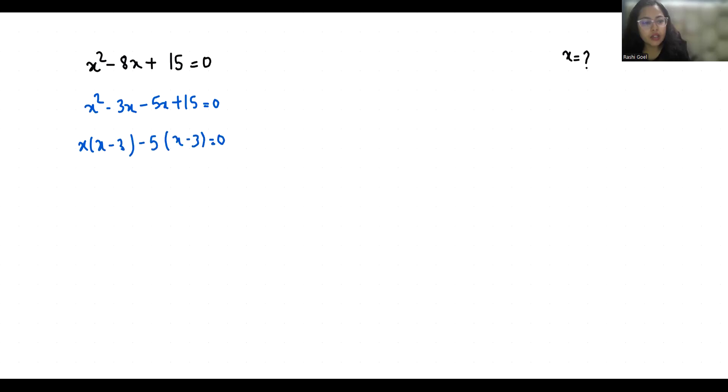Now x minus 3 is common so x minus 5 equals 0. So these are the two factors. Now to find out the solution put the factor equals to 0.